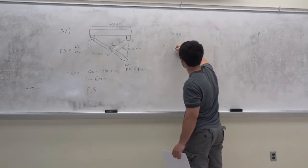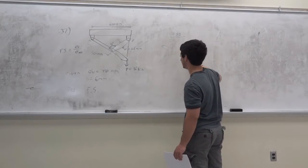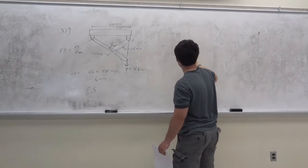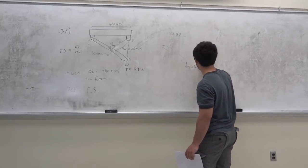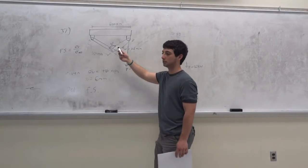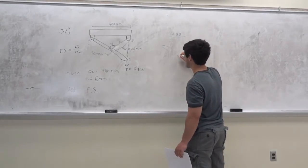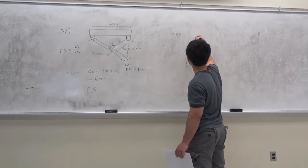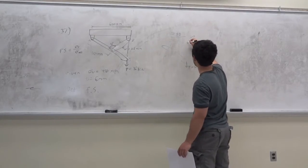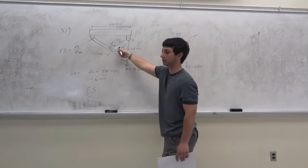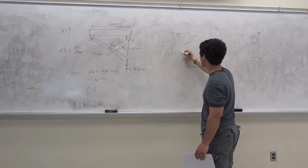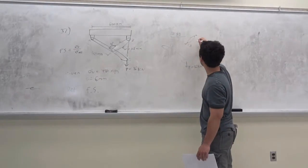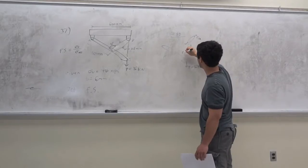The free body diagram looks like this. This is member ACP. We have this force going down — this is P, which is equal to 16 kilonewtons. We have a force over here from member CB, which is a two-force member, so it's going to be in tension. You can see if you're pulling this down, this member has to be in tension. So this force we're going to call F_CB — equal and opposite, pointing in this direction.